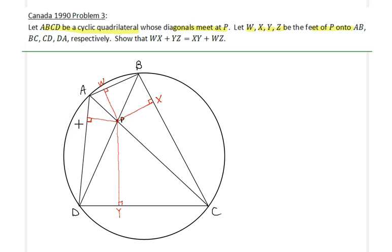So we are given the feet of these altitudes, and we would like now to show that this condition holds. Let's start. This is a simple angle-chasing problem. Obviously we have a cyclic quadrilateral.